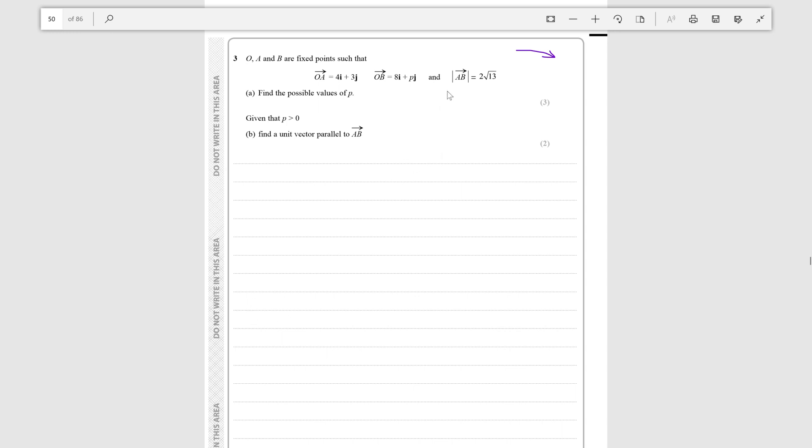Let's get started. Let's find the possible values of p. My current thinking is that if we can find the value of AB even if it's in terms of p, we can find the value of p from the fact that the magnitude of a vector is the square root of the sum of the squares of its i value and its j value.